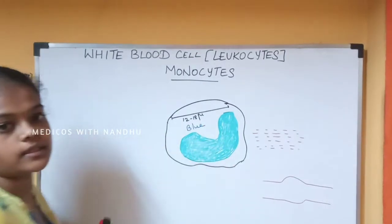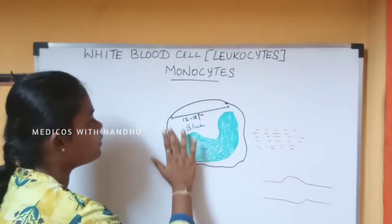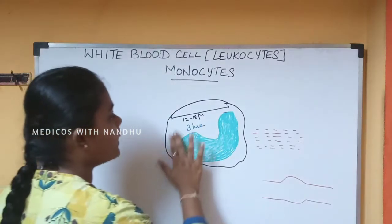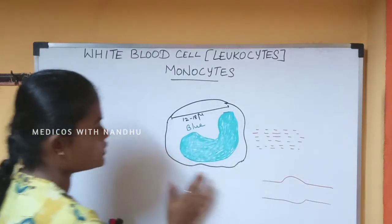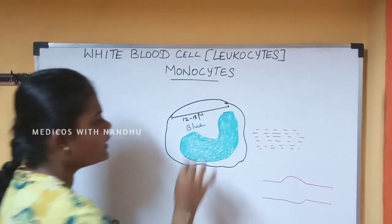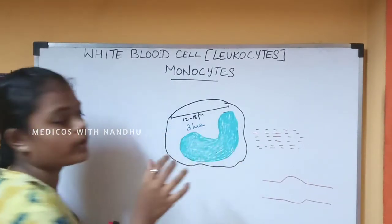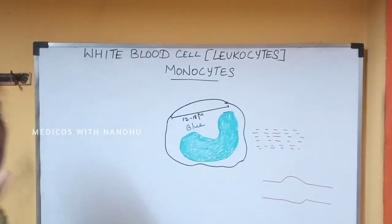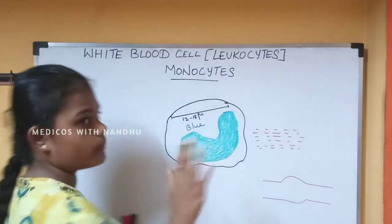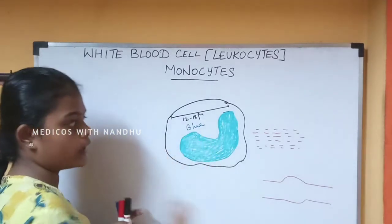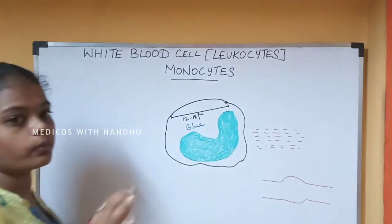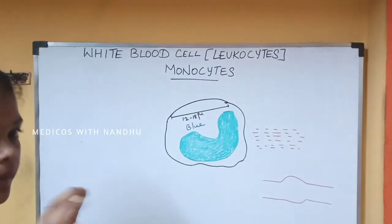An important point about the monocyte nucleus: there is an absence of granules. It is not a granular cell. Under the microscope it stains pale blue — no granules, just a pale blue color.